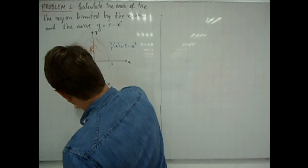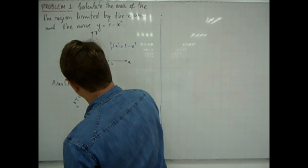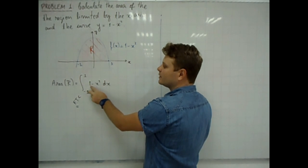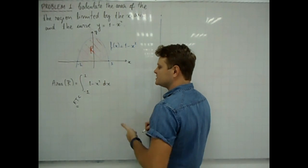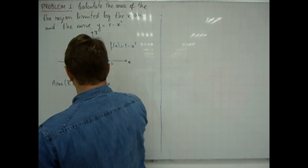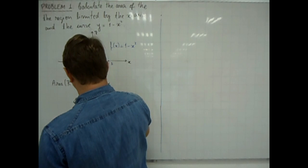So then, from the fundamental theorem of calculus, we know that we only need to find a function whose derivative is equal to 1 minus x squared. It is not so difficult to come up with x minus x cubed divided by 3.